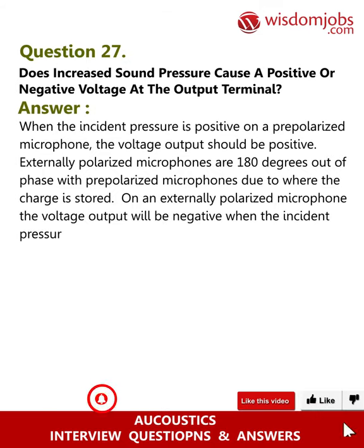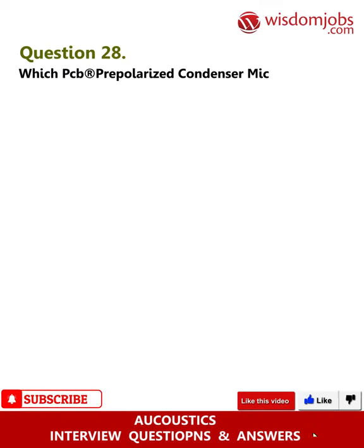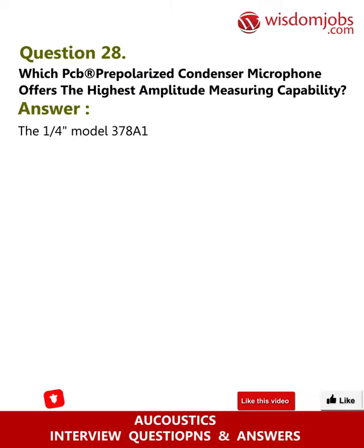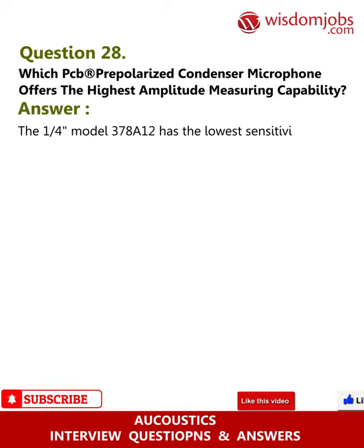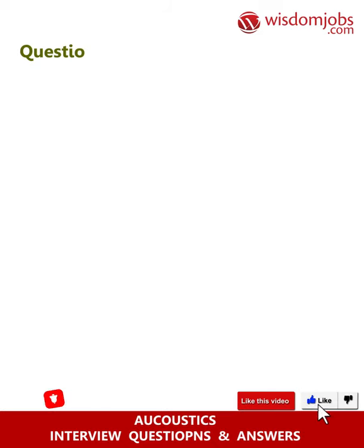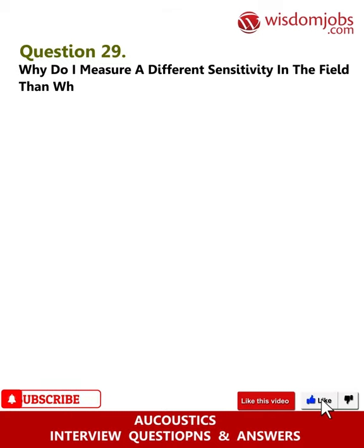Question 28: Which PCB pre-polarized condenser microphone offers the highest amplitude measuring capability? Answer: The one-quarter-inch model 378A12 has the lowest sensitivity at 0.25 millivolts per pascal. This allows it to measure extremely high amplitudes.